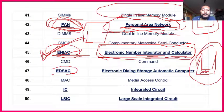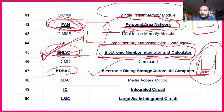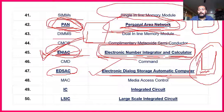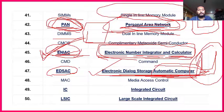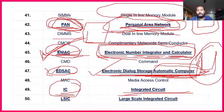EDSAC — Electronic Delay Storage Automatic Computer — is also important. It stores data using some instrument or device — that is the delay storage. It automatically saves data. IC — Integrated Circuit — has been asked several times and is important.